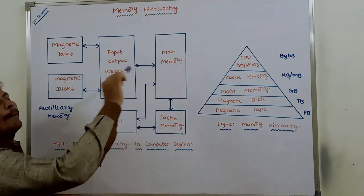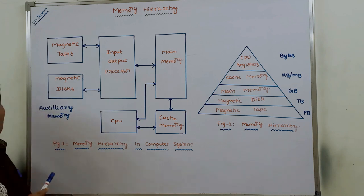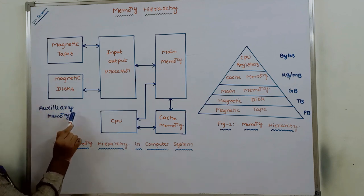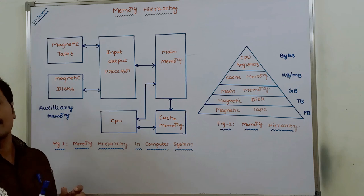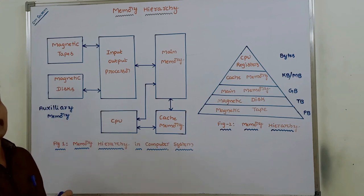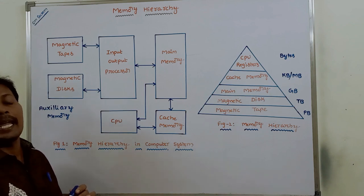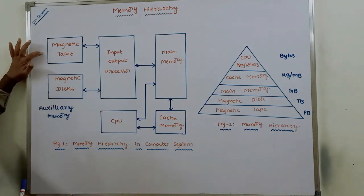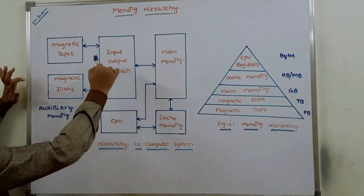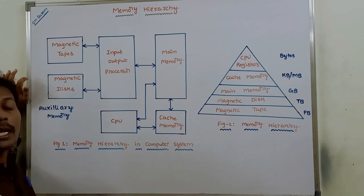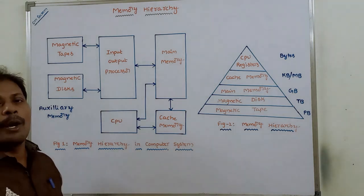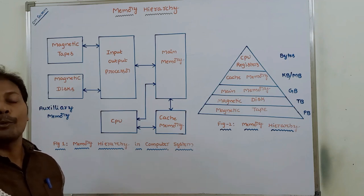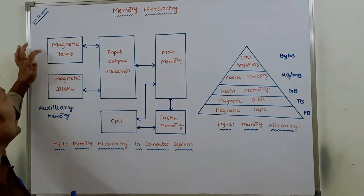At the bottom of the memory hierarchy, the auxiliary memory is available. The auxiliary memory can also be called as secondary memory. Devices that provide backup storage can be called as auxiliary memory. The most commonly used auxiliary memory devices in the computer system are magnetic tapes and magnetic disks. Magnetic tape is used for storing removable files — whatever files that are deleted from the computer system are stored in the magnetic tape.